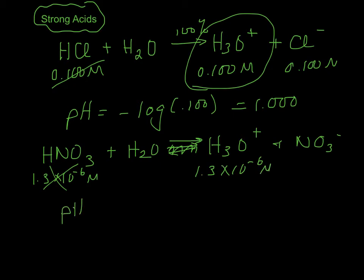So the pH is just minus the log of 1.3 times 10 to the minus 6. So for that, you should get 5 point, what do I need? 2 sig figs. So 5.89. So that's how you find the pH of a strong acid.